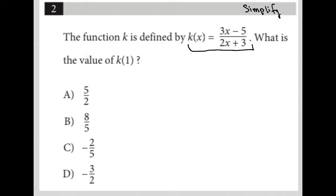So even easier than your typical simplified question is this because if k of x is equal to 3x minus 5 over 2x plus 3, then k of 1, I'm replacing this x with 1, which means I'd also replace these x's with 1 as well.